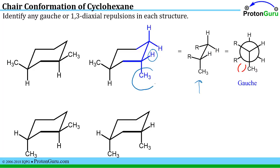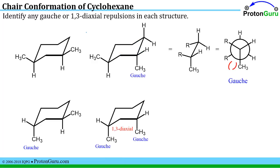So I'd have a gauche interaction in this structure, this structure, and this structure. No gauche interactions here because both of these methyl groups are equatorial.